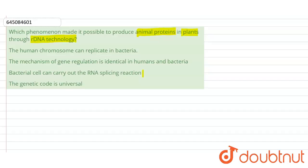So here, first we need to find that which phenomena made it possible to produce animal proteins in plants through the rDNA technology. What is this rDNA technology? rDNA means recombinant DNA.